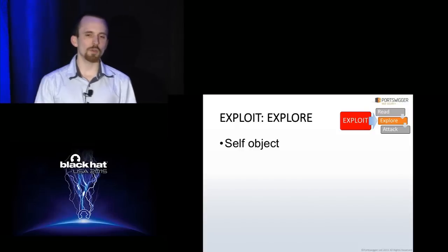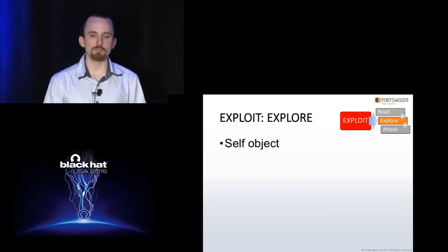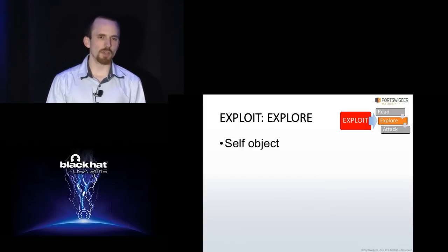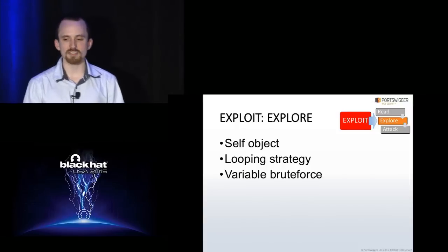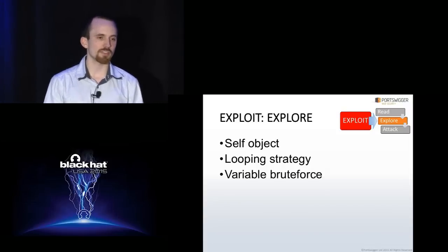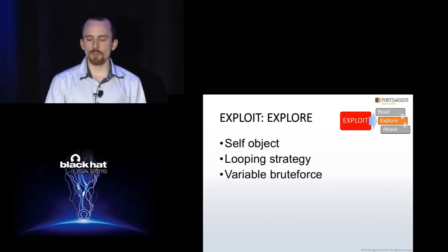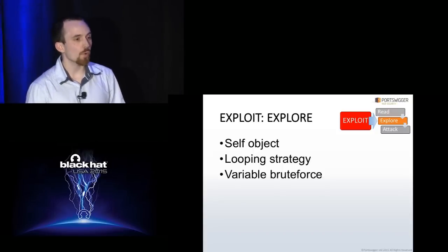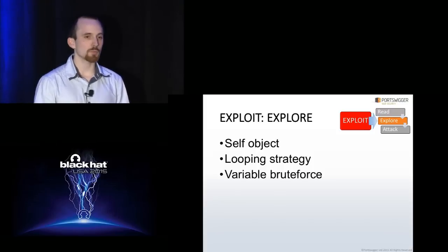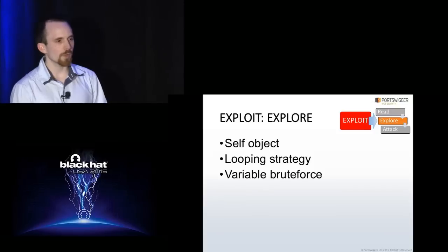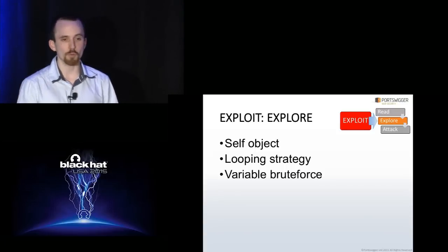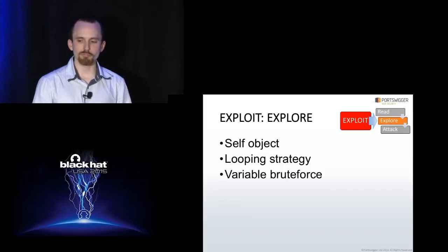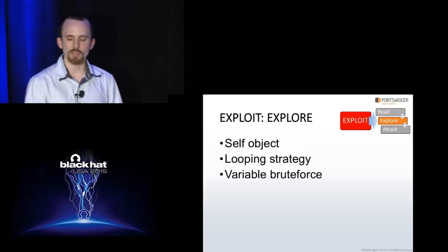The next step is to find out exactly what you have access to within the template execution environment. Most template engines have some kind of self-object containing everything that's in scope. If you can find the name of this and loop around its attributes and methods, you can iteratively identify everything you have access to. Some template engines don't have a documented self-object, but may still have one for internal use. For this use case, I've built a word list by crawling GitHub for the most popular variable names, so you can brute-force potential variables. I've released this word list in Burp Intruder, and it's also being added to FuzzDB.